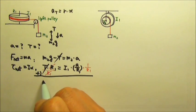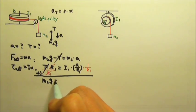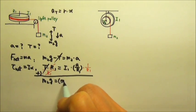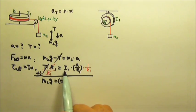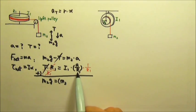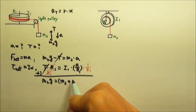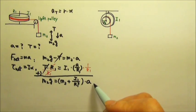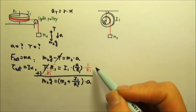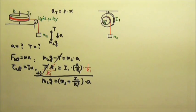We would have M2G on this side and M2 times A plus I1 divided by R1 squared times A. We can factor the A out and put I1 over R1 squared right here. Then we can use this to solve for the acceleration if we divide by this on both sides, and then plug the A back in to find the tension.